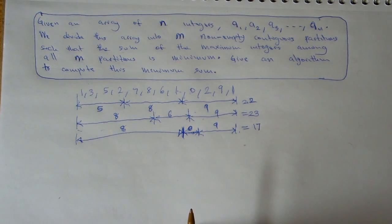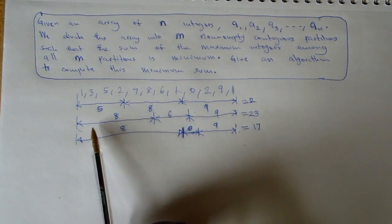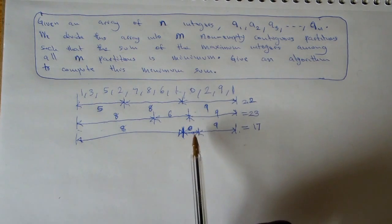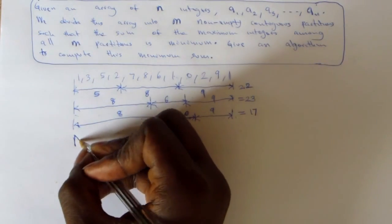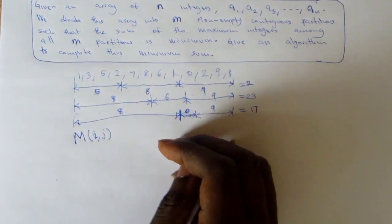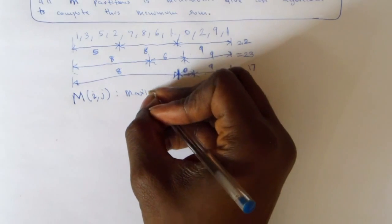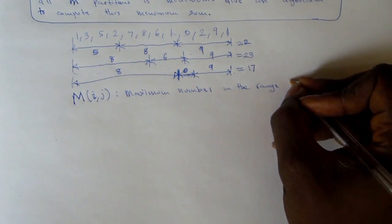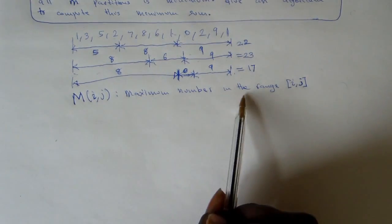How do we solve this problem? One thing we can notice is that we always have to find the maximum in a certain range. So let's define M(i,j), which is simply the maximum number in the range i up to j, inclusive.